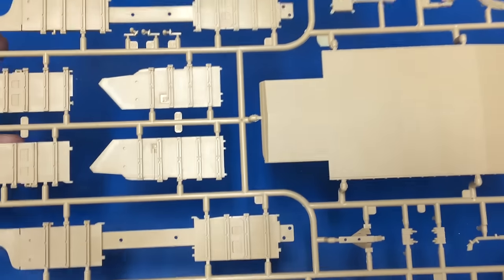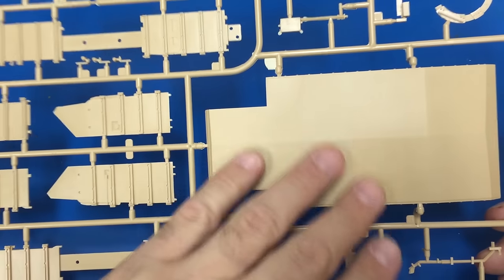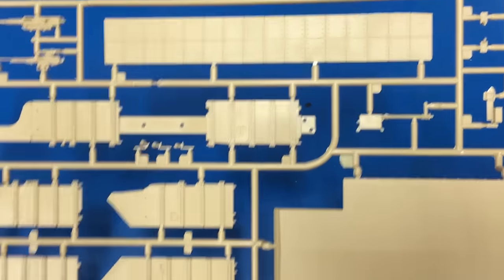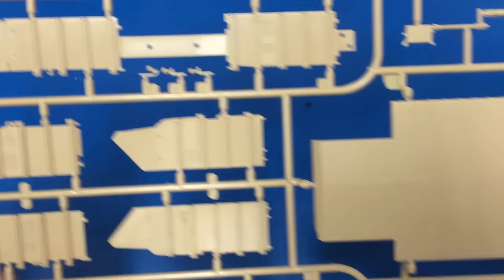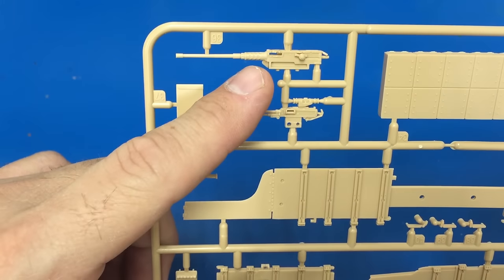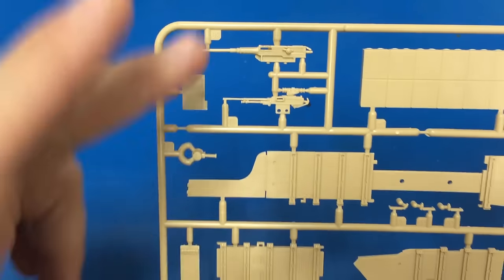After that, we're going to look at some of the side armor for the Tusk 1 version. And you get the underbelly special armor, plus all the block armor on the side here. And that's all been molded very nicely. The machine gun is nice too, but not as nice as the Ryfield model one. This one you might have to hollow out a little bit, or actually just get a metal barrel for it.